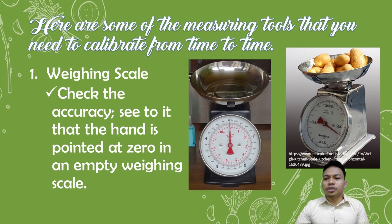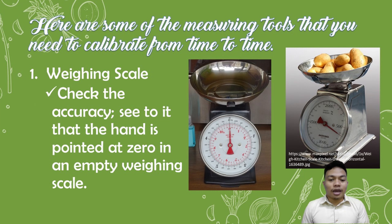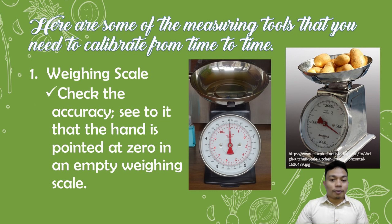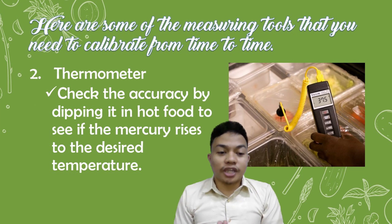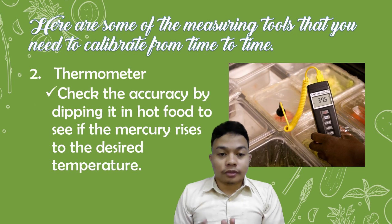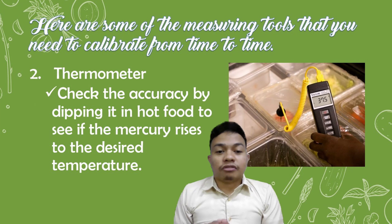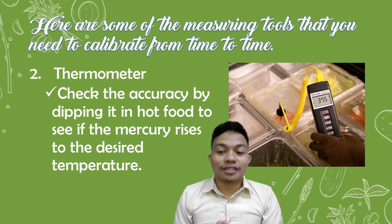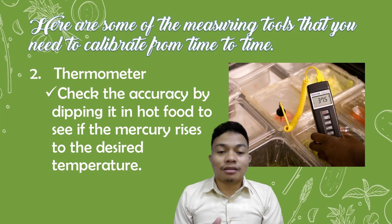Here are some measuring tools that we need to calibrate from time to time. First, the weighing scale — check its accuracy and see to it that the hand is pointed at zero when the scale is empty. If it is not at zero, the readings will be inaccurate and can affect your output in food processing. Another tool is the thermometer — to check its accuracy, dip the thermometer into hot food to see if the mercury rises to the desired temperature. If the reading does not move, then we need to calibrate our thermometer.